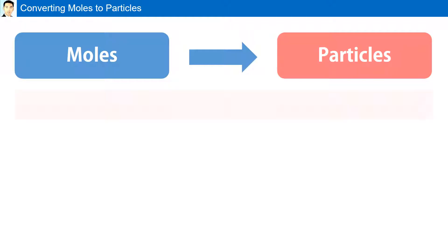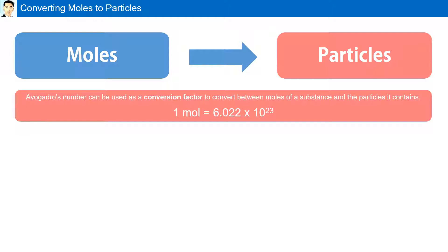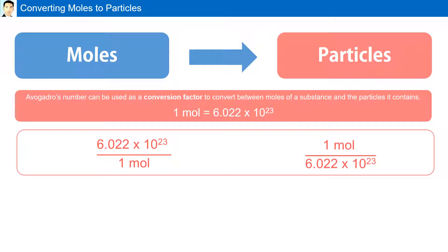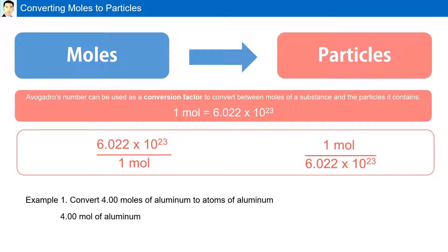Converting moles to particles. Avogadro's number can be used as a conversion factor to convert between moles of a substance and the particles it contains. We use the equality: 1 mole = 6.022×10²³ to create two conversion factors. For example, to convert 4 moles of aluminum to atoms, we select the conversion factor 6.022×10²³ over 1 mole. Calculating that, we get 2.41×10²⁴ atoms of aluminum — the number of atoms present in 4 moles of aluminum.